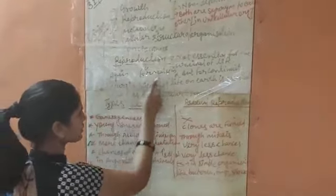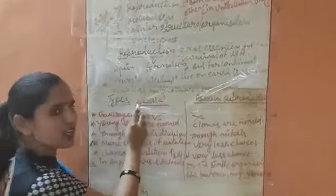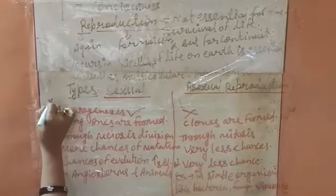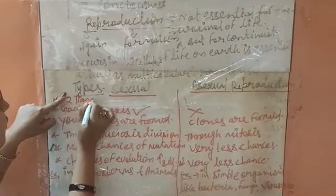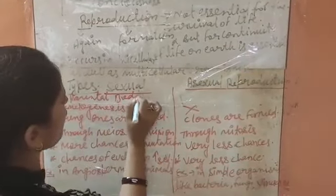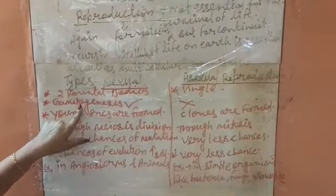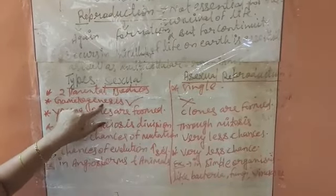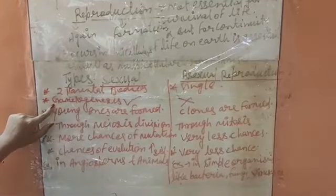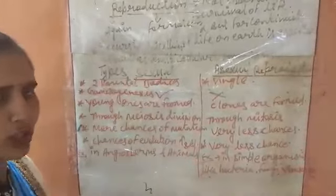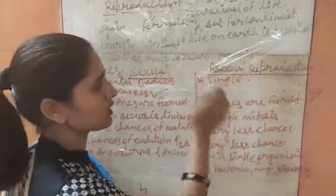Reproduction is of two types. The first is sexual reproduction and the other is asexual reproduction. In sexual reproduction, two parental bodies are required to produce a young one. In asexual reproduction, only a single parent is enough. In sexual reproduction, the process of gametogenesis occurs — 'genesis' means formation and 'gameto' means gamete — while gametogenesis is absent in asexual reproduction.